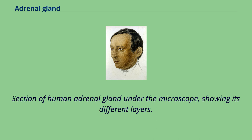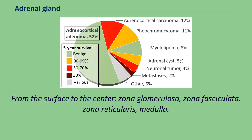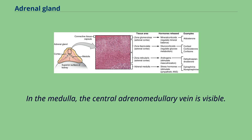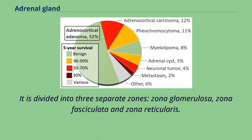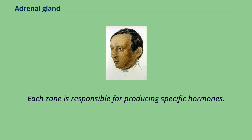A section of the human adrenal gland under the microscope shows its different layers. From the surface to the center: zona glomerulosa, zona fasciculata, zona reticularis, and medulla. In the medulla, the central adrenomedullary vein is visible. The adrenal cortex is the outer region and also the largest part of an adrenal gland. It is divided into three separate zones — zona glomerulosa, zona fasciculata, and zona reticularis — each responsible for producing specific hormones.